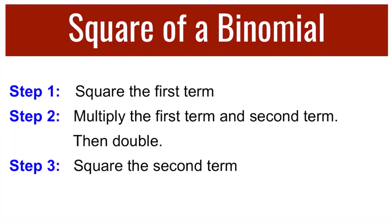Step 1: Square the first term. Step 2: Multiply the first and the second term, then double. And Step 3: Square the second term.